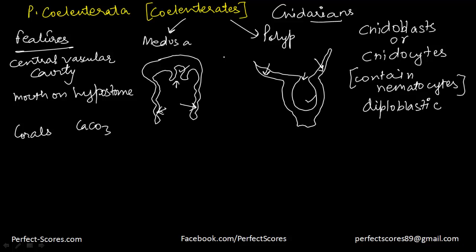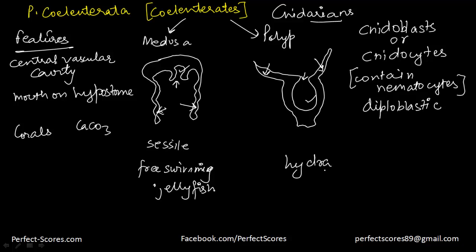Cnidarians usually exhibit two basic body forms. The first one is the polyp: it is sessile and cylindrical. The second one is the medusa: it is umbrella-shaped and free swimming. The example of the medusa is a jellyfish; an example of the polyp is Hydra or Adamsia. There are some cnidarians that can be present in both medusa form and polyp form, so they keep alternating between different generations — a process called metagenesis.